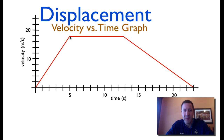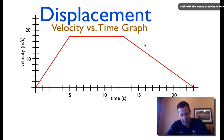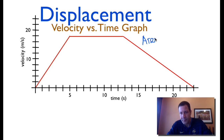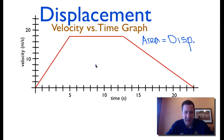The object goes from 0 velocity to 18 meters per second, then has constant velocity from 5 to 13 seconds, and then starts to slow down, still moving in the positive direction, from 13 to 24 seconds until its velocity comes back to 0. Now, the key thing to remember is that the area under the curve is equal to the displacement. What we mean by area under the curve is the area between the curve and the 0 velocity line.